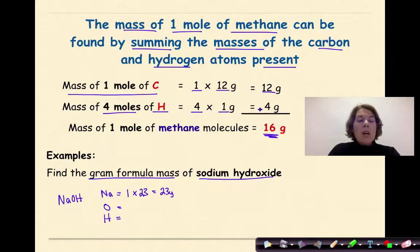I have one oxygen. So one times 16, because the atomic mass is 16, that's going to be 16 grams. And then I have one hydrogen. So one hydrogen times one gram, because that's the atomic mass of hydrogen, is equal to one gram of hydrogen. And if I add these up, 23 plus 16 plus 1, I get a total of 40 grams per 1 mole of sodium hydroxide. And that is how you determine gram formula mass.